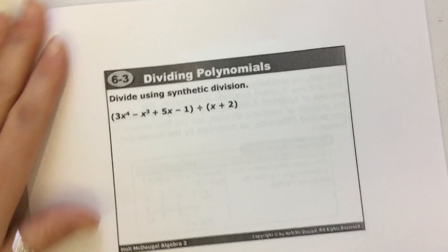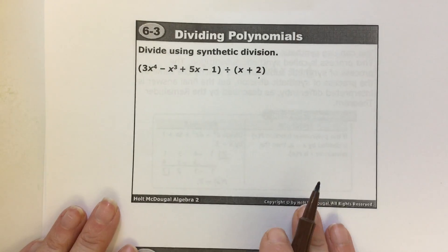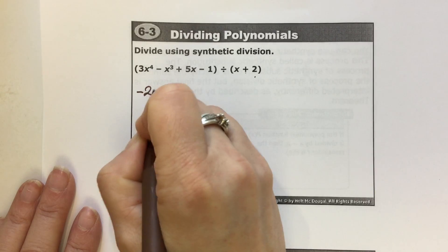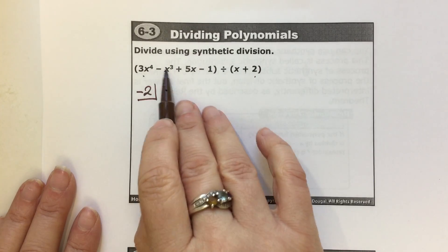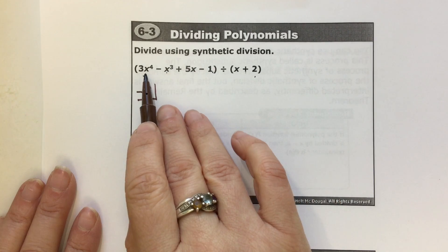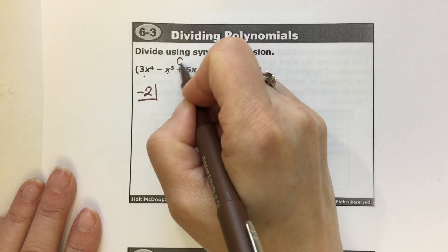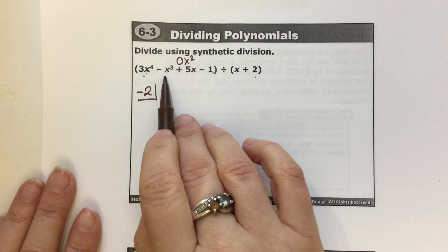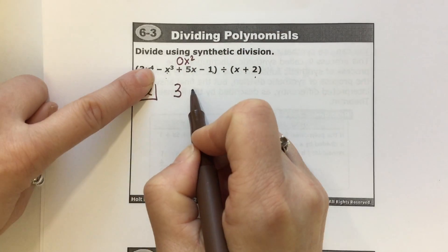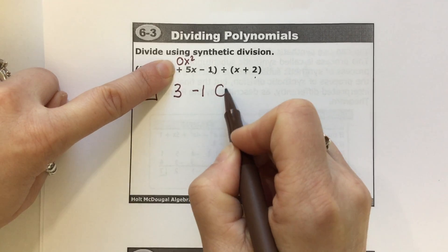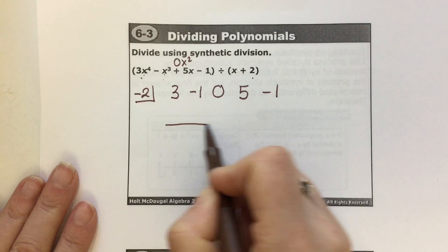Let's do another one. x plus 2 means we're subtracting a negative 2, so negative 2 goes in the box. The polynomial has 4x's, 3x's, 1x, and no x's — you cannot skip the 2x² term, so you need a 2 in there: 4, 3, 2, 1, 0. The coefficients are 3, negative 1, 0 for x squared, 5, and negative 1. Carry down the first term, which is 3.